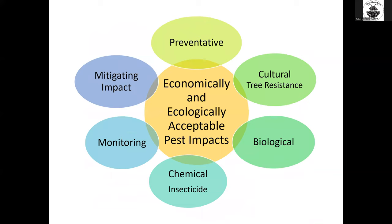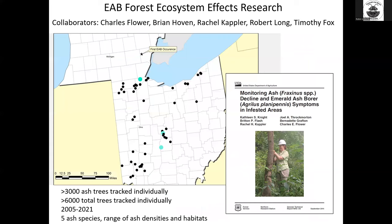I have many research projects that are part of these different strategies to respond to EAB. Today we'll start with the monitoring work on impacts of EAB in Ohio and Pennsylvania. We started monitoring impacts of emerald ash borer in Ohio back in 2005, setting up a series of long-term monitoring plots where we monitored over 3,000 ash trees that were the larger size class, tracking them individually over time and also tracking other tree species. We had all five different ash species in a range of different densities and habitats represented in this study.